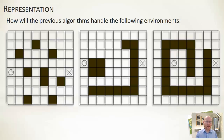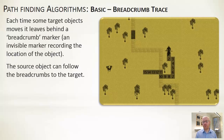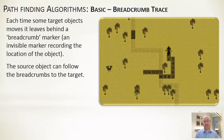As a final aside, some games use the idea of leaving a breadcrumb trace — as a character walks, invisible breadcrumbs are left behind that an AI character can follow, useful for tracking or other purposes.